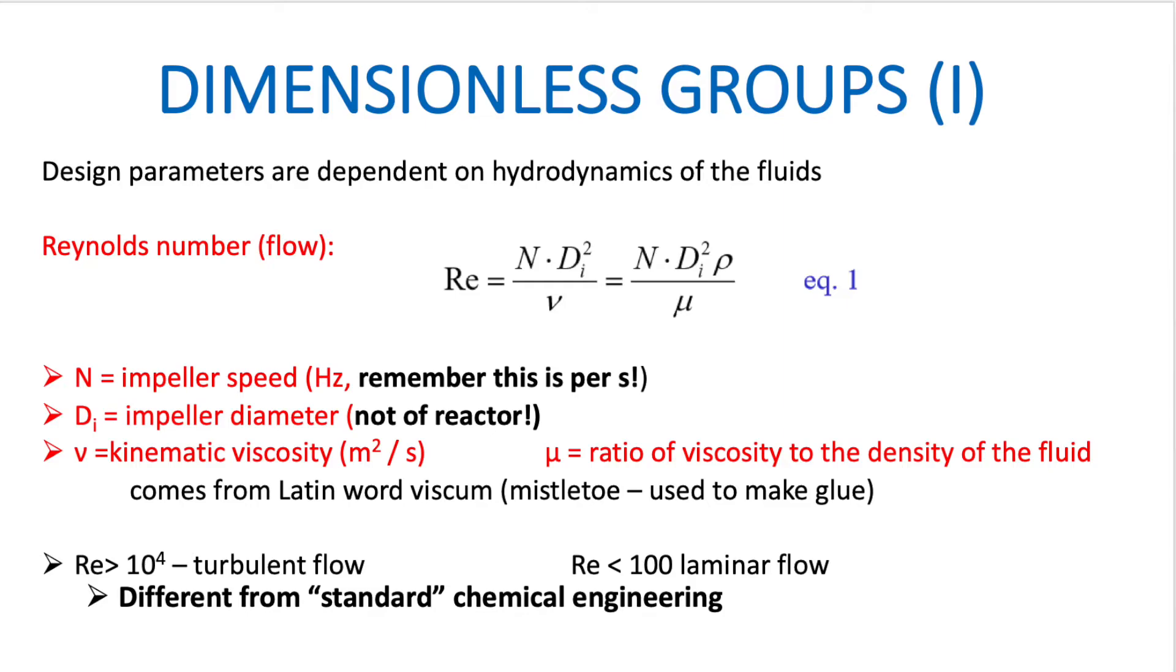For the power calculations we're going to do, the first thing we need to determine is the Reynolds number. So we need to look at whether the flow is turbulent or laminar. So the regime in which is turbulent and laminar, so please note, look at the slide, is a little bit different from standard chemical engineering.